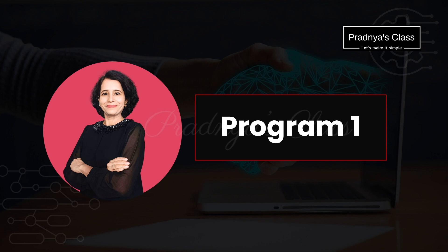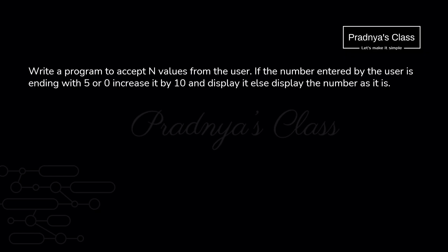Theory will be easy to understand but it will be clear when we actually write some programs. So let's start writing some programs. Here is the first one: we need to accept n values from the user, enter that many numbers. The number which is ending with 5 or 0 will get increased by 10, otherwise we print the number as it is. Before directly writing the code, first understand the logic of the program.